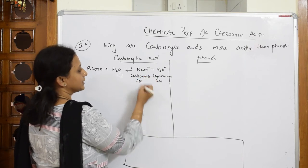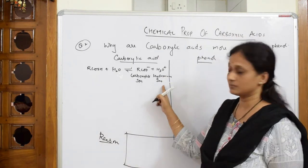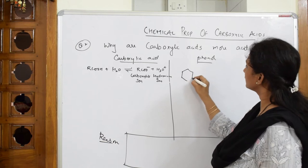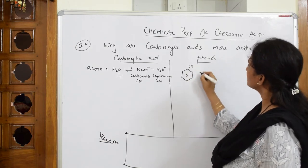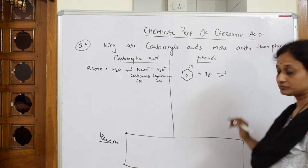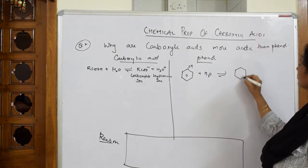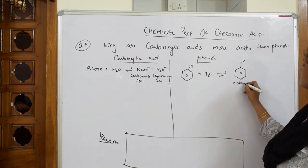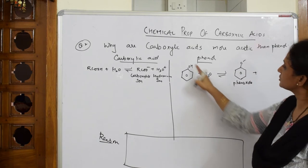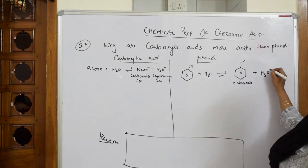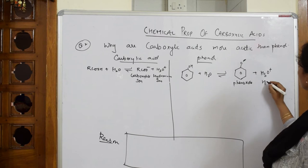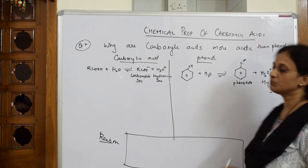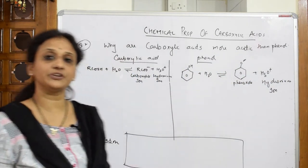Because it is releasing hydronium, I can say it is acidic. For phenol, when I take phenol crystals and dissolve them in water, this also dissociates into two ions: the phenoxide ion and H3O+. So this gives the carboxylate ion, and phenol gives the phenoxide ion — both have released hydronium. Now, how do I decide which is more acidic when both are releasing hydronium? The concept which differentiates them is resonance.